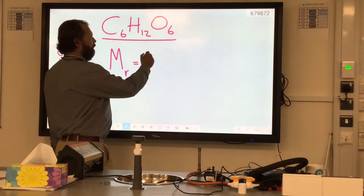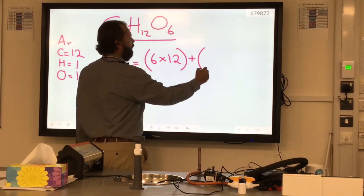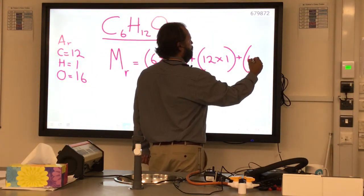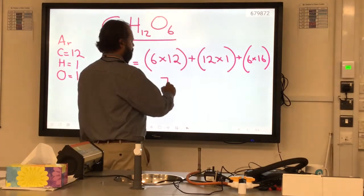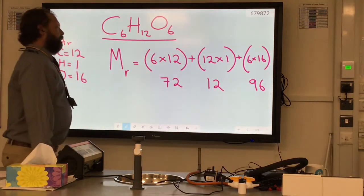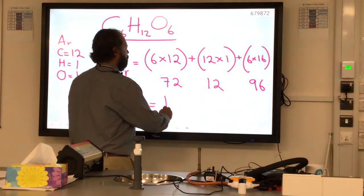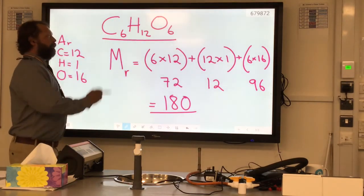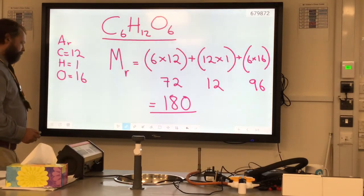Now in this molecule there are six carbons that weigh 12 each, there are 12 hydrogens that weigh one each, and there are six oxygens which weigh 16 each. We could put those numbers into our calculator - brackets first - 72, 12, 96, and we can add those together. The relative formula mass of C6H12O6 glucose is 180.